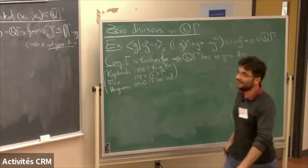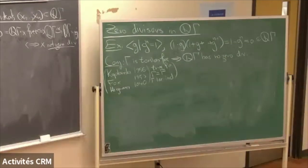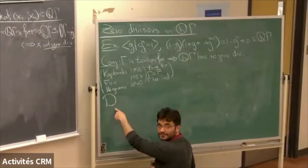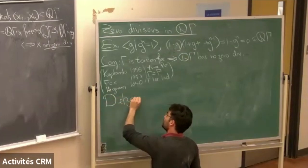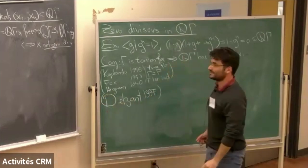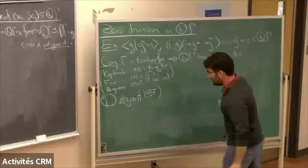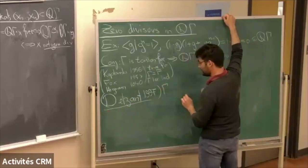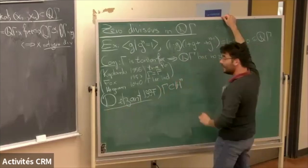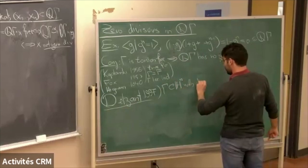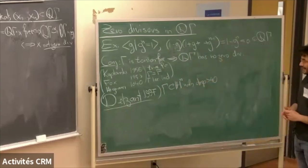Now I want to tell you something related to negative curvature. There's a really nice result due to Delzant from 1997 which inspired a lot of this work. For delta-hyperbolic groups: if you have a group acting on hyperbolic space with large displacement — specifically displacement greater than 40 delta, which is good enough — then the group ring has no zero divisors. So every nonidentity element moves every point by at least 40 delta.